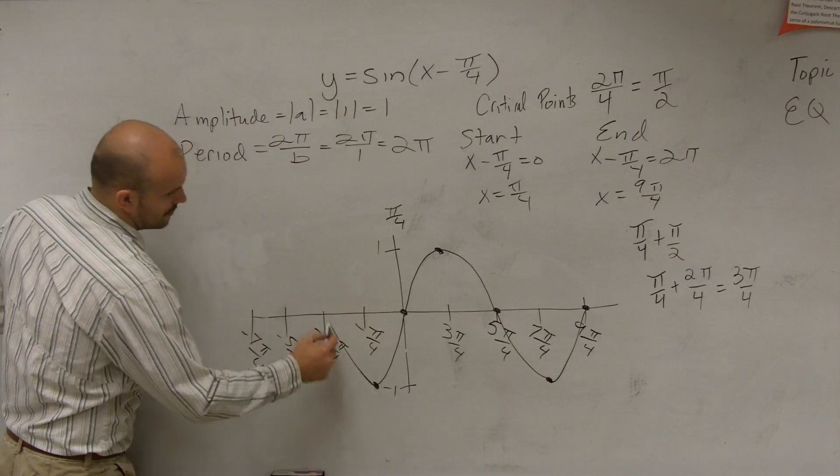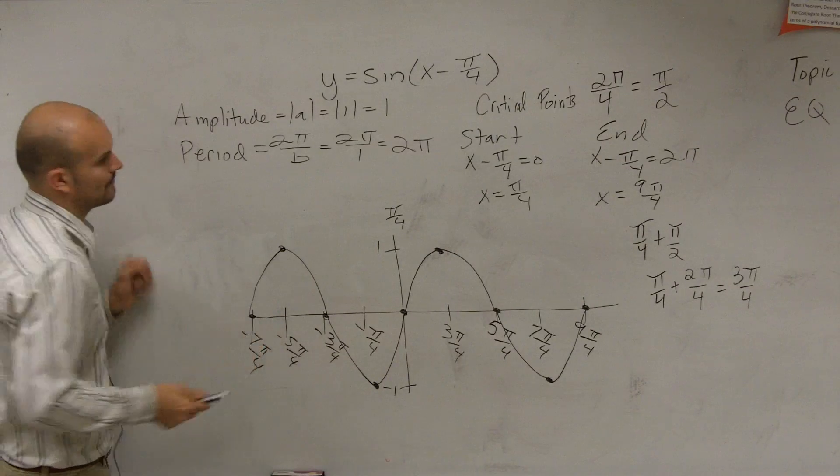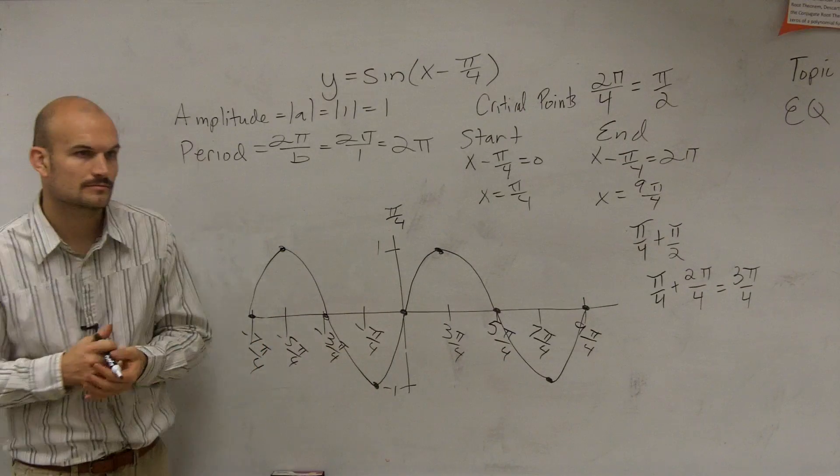Then it goes down, comes up, goes to its max, and goes back down. And what's the π over 4? Is this actually the parent graph?